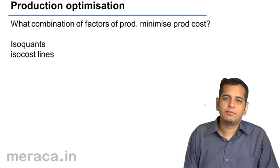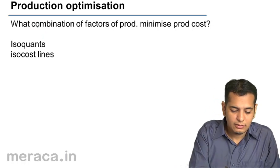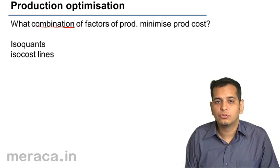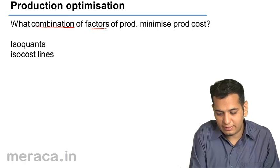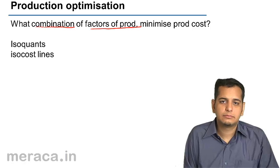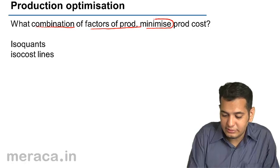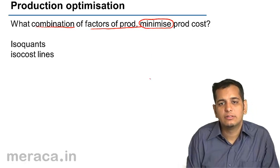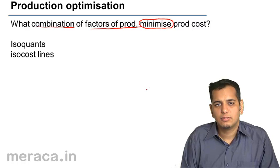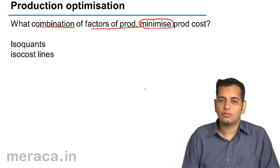What is production optimization? Production optimization is nothing but the combination that we need to use of factors of production to minimize the cost of production.